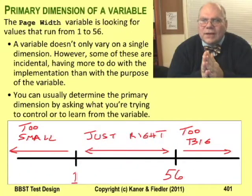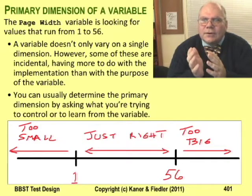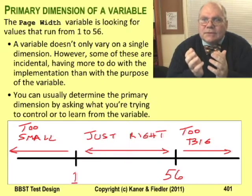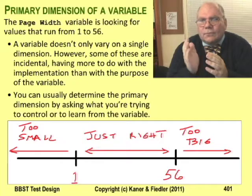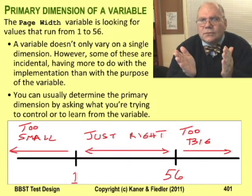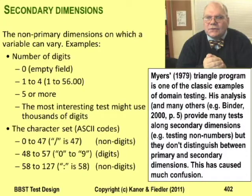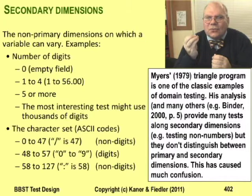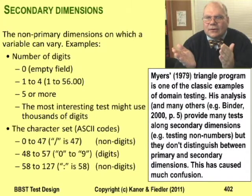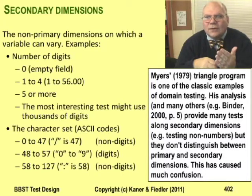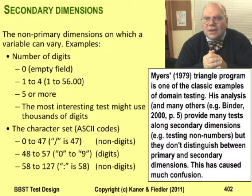A couple slides ago, I noted that we hadn't fully analyzed the input domain, and I mentioned the number of digits after the decimal point. Here's where we draw the distinction between primary dimensions and secondary dimensions. So far, our example is focused on the primary dimension for page width. The primary dimension specifies the width of the slides, and our permissible widths are from 1 to 56. Values below one are too small, values above are too big. The number of digits you can enter into the page width field is an example of a secondary dimension. You're entering numbers to specify the width of a slide — that's the difference between a primary dimension and its secondaries. The primary dimension reflects the reason you're entering the data into the field; the secondaries reflect all of the other ways that the input can vary.